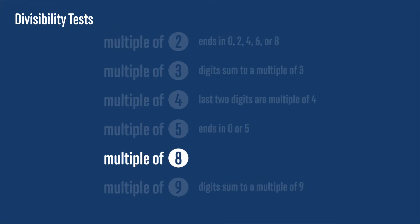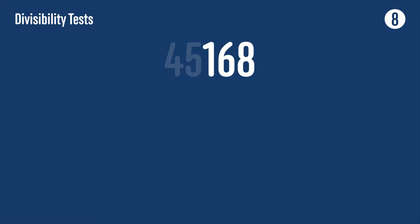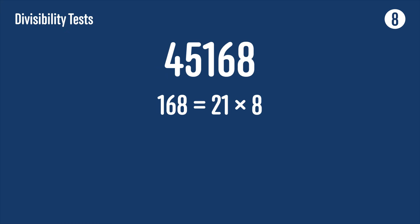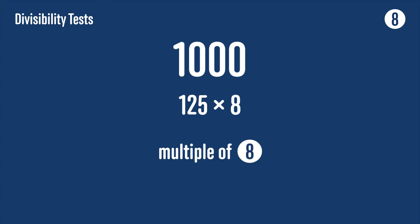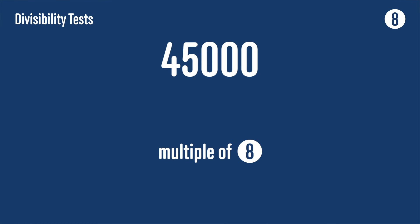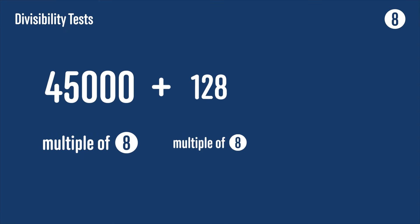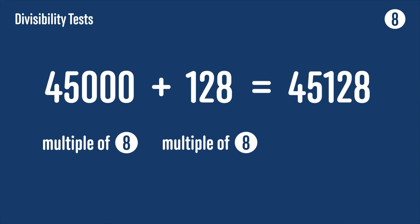The test for multiples of 8 is very similar, though we need to look at the last three digits of the number. If that three-digit number is a multiple of 8, then so is the original number. Take for example 45,168: the last three digits are 168, and 168 = 21 × 8. So 45,168 and any other number ending in 168 is a multiple of 8. That's because 1,000 = 125 × 8, so any multiple of 1,000 is also a multiple of 8. Then adding on a multiple of 8 gives another multiple of 8.